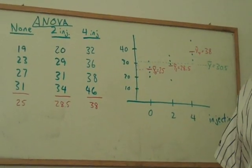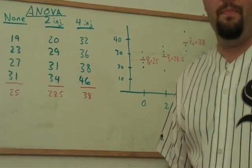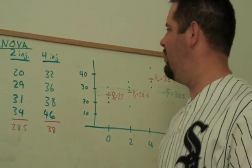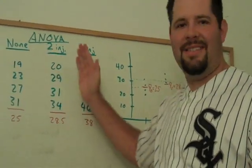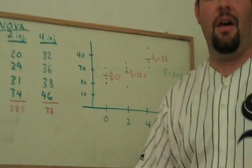We want to see, well, what is, like, how much can we attribute to this random variation, and how much can we attribute to actually assigning these players to these different groups. That's the idea of ANOVA.